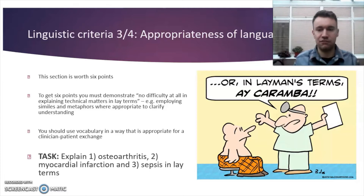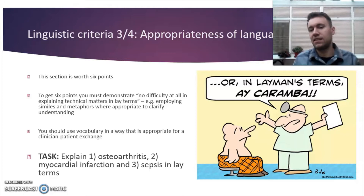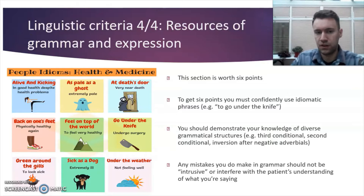For example, if you're talking about a degenerative disease and wanted to explain the myelin sheath on a neuron, you might describe it as being like the insulation around a pipe — using a simile to make the information more accessible in everyday terms for somebody without clinical knowledge.